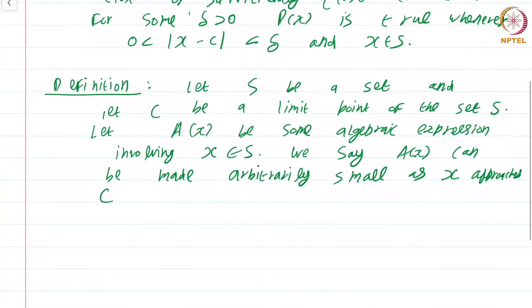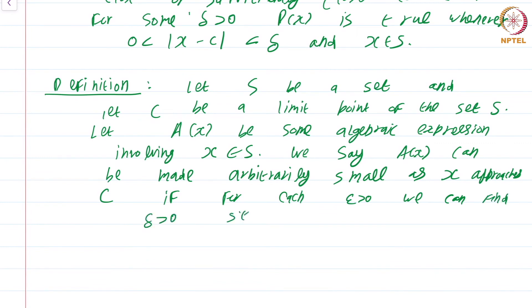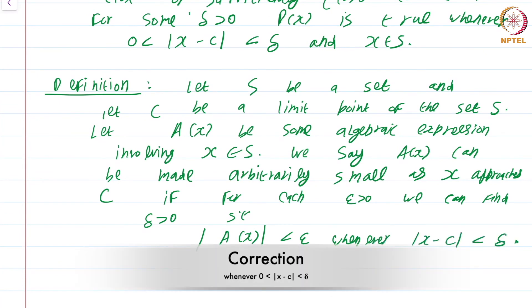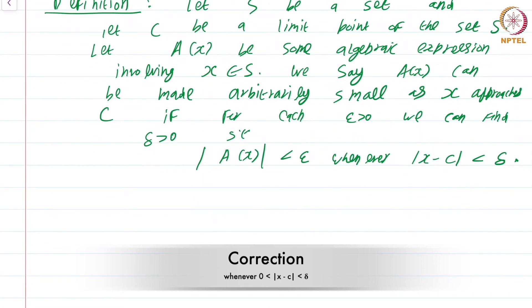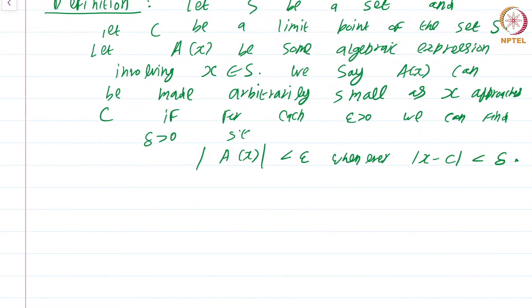This should be very familiar. For each epsilon greater than 0, we can find delta greater than 0 such that |a(x)| < epsilon whenever |x − c| < delta. This is just giving another meaning to the term limit — it is just saying that the limit as x goes to c of a(x) equals 0. We are just calling it 'can be made arbitrarily small'.